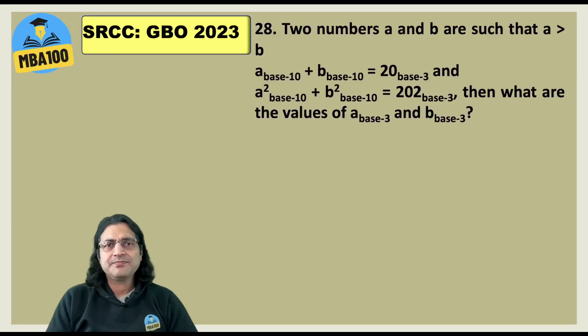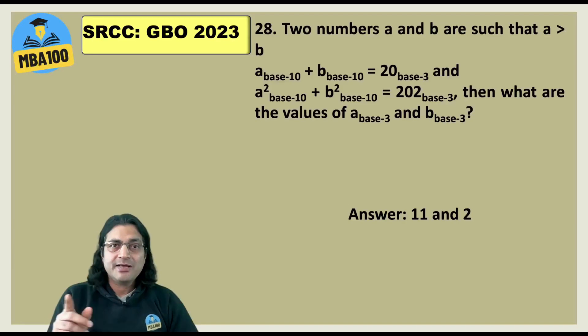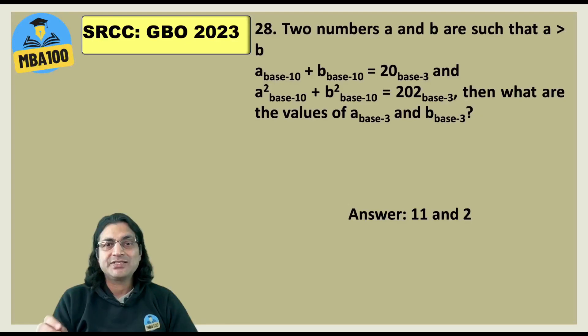Another conceptual question. If you are comfortable with the bases, you will get the answer. 11 and 2 and hey, this 11 is in base 3. So in base 10, its value would be 4. I do not remember if 4 and 2 was also one of the options. But had they put 4 and 2 or if they have put 4 and 2, I do not know, as one of the options, then that is a very good trap. But they very clearly asked you to get the values in base 3. So 4 becomes 11 in base 3.